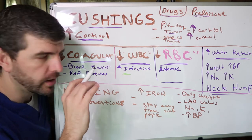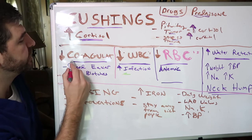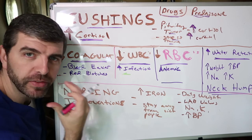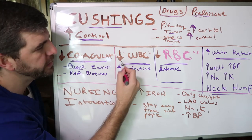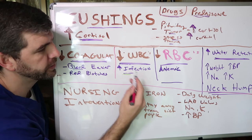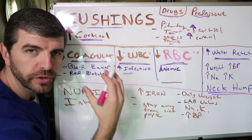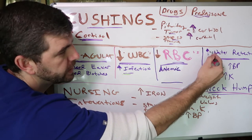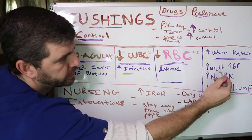Now let's look at things to watch out for with Cushing's disease. We're going to have decreased coagulation — they're going to bleed easier. They'll have red blotches on the skin and face from small capillaries. We're going to have a decrease in white blood cells, an increase in infection risk, a decrease in red blood cells, and some anemia as well.